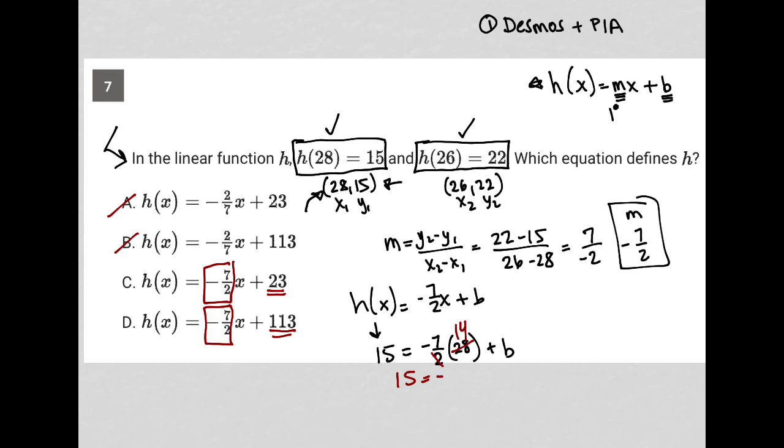So 15 equals negative 98 plus b. So to solve for b, I'd add 98 to both sides.